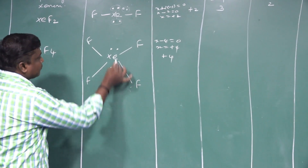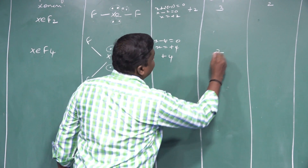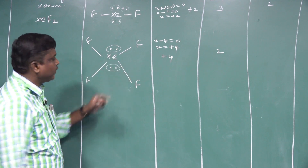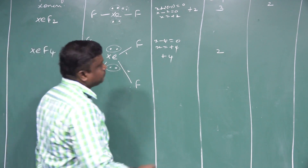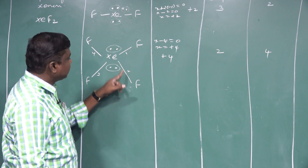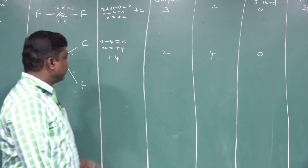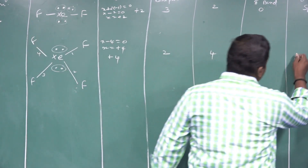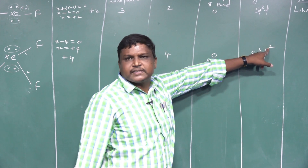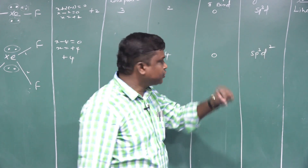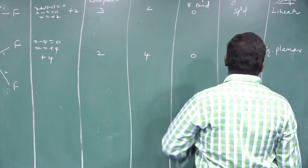For XeF4: number of lone pairs of electrons = 2. Number of sigma bonds = 4. Number of pi bonds = 0 (no double bond). Hybridization = sp3d2. Shape = square planar.